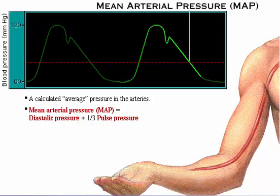Mean arterial pressure equals diastolic pressure plus one-third of the pulse pressure. Mean arterial pressure is not simply calculated as the average of systolic and diastolic pressure because diastole lasts longer than systole, so the mean arterial pressure is closer to the diastolic pressure than to the systolic pressure. Mean arterial pressure is the force that propels the blood to the tissues throughout the cardiac cycle.